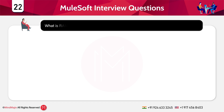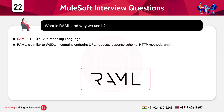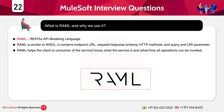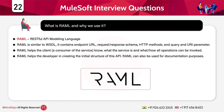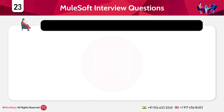What is RAML and why do we use it? RAML stands for RESTful API Modeling Language. RAML is similar to WSDL — it contains endpoint URLs, request/response schema, HTTP methods, and query and URL parameters. RAML helps the client, who is a consumer of the service, understand what the service is and what operations can be invoked. RAML helps developers create the initial structure of an API and can also be used for documentation purposes.